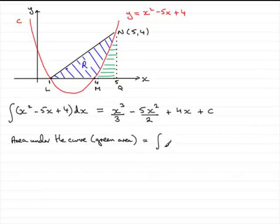It's going to be equal to the integral of the curve, y with respect to x, going from x is 4 to 5. So 4 there, 5 there, going from 4 to 5.